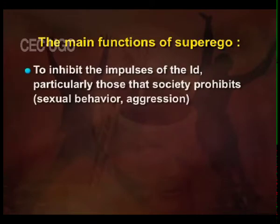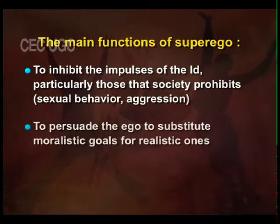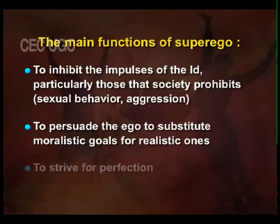The main functions of superego are to inhibit the impulses of the id, particularly those that society prohibits — for example, sexual behavior and aggression. Secondly, it persuades the ego to substitute moralistic goals for realistic ones, and it also strives for perfection.